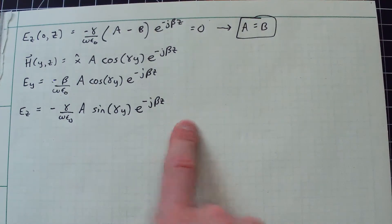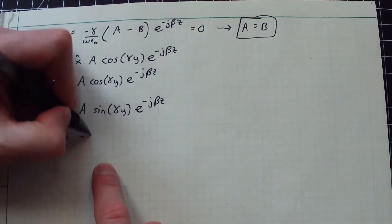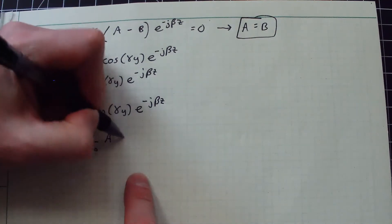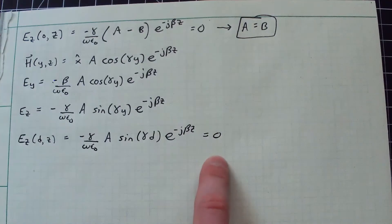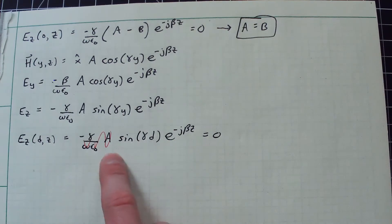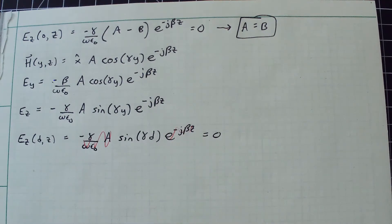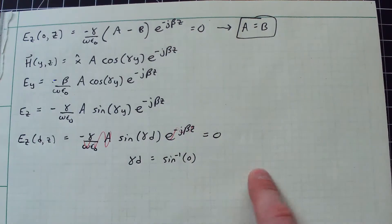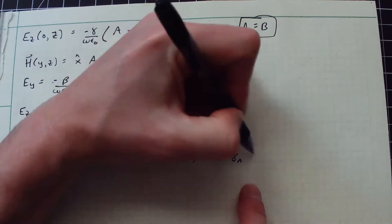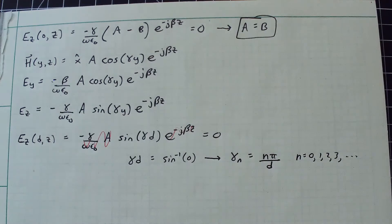The second boundary condition, E_z(d, z) = 0, gives: −γ/(ωε₀) · A · sin(γd) · e^(−jβz) = 0. Since the prefactors and the exponential cannot be zero for all z, we need sin(γd) = 0, meaning γd = nπ. This gives γ_n = nπ/d, where n = 0, 1, 2, 3, …